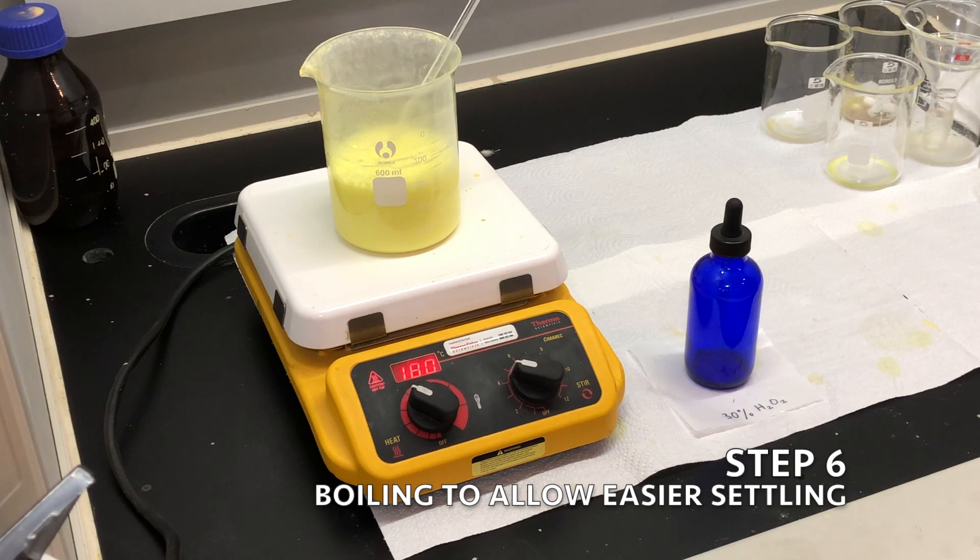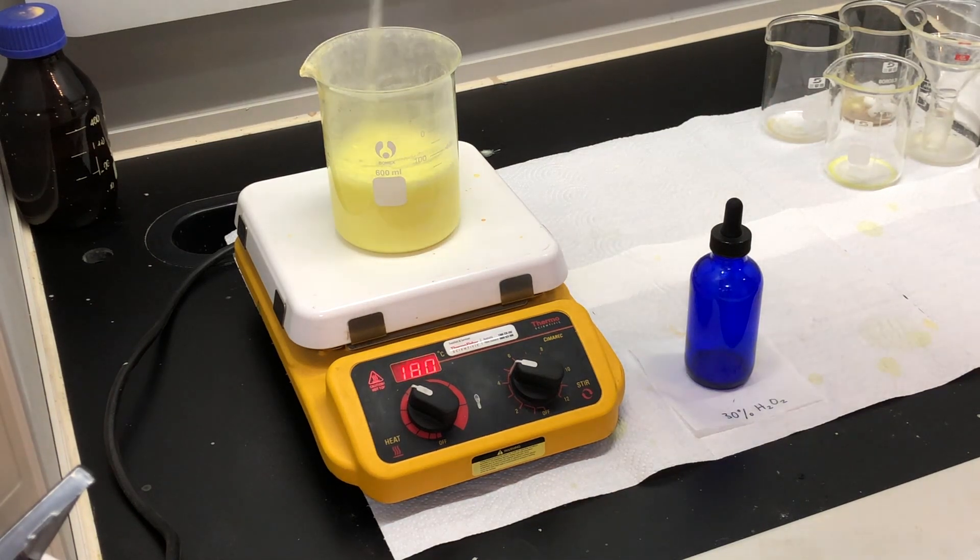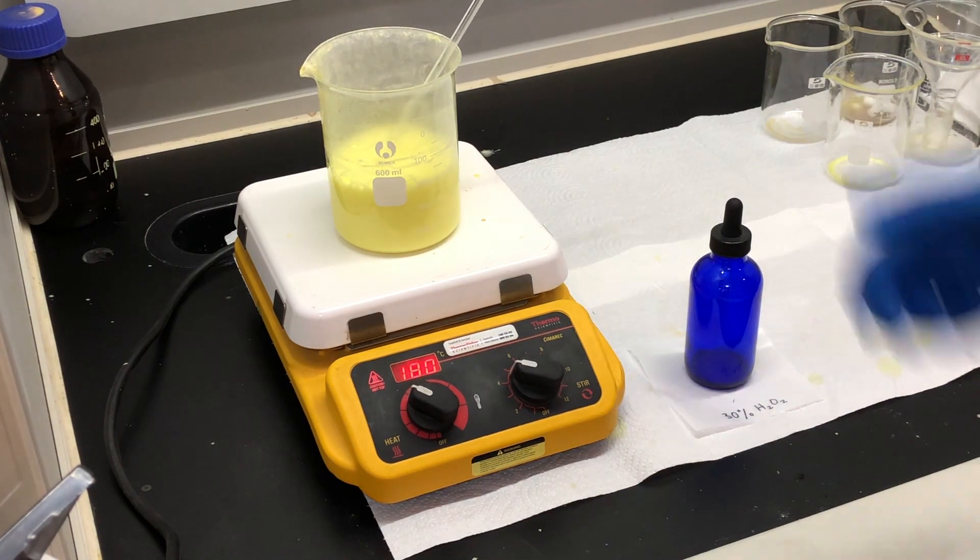After the hydrogen peroxide addition, you can see the light yellow uranium peroxide precipitate. Keep boiling for another hour to allow the precipitate to coalesce and be easier to filter.